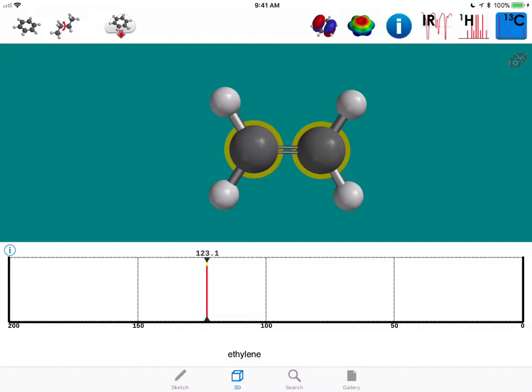So in alkene SP2 hybridized carbon, you'll typically see around 120 to 140 parts per million. And then the proton bonded to that SP2 hybridized carbon, you'll see between five and seven parts per million in that spectrum.